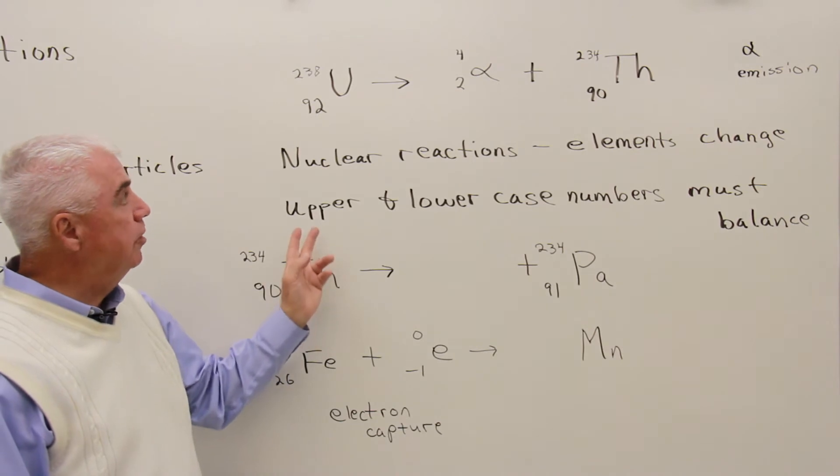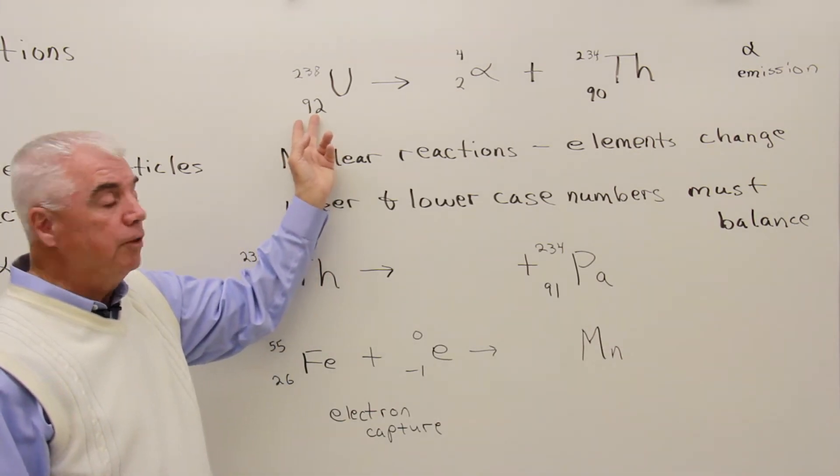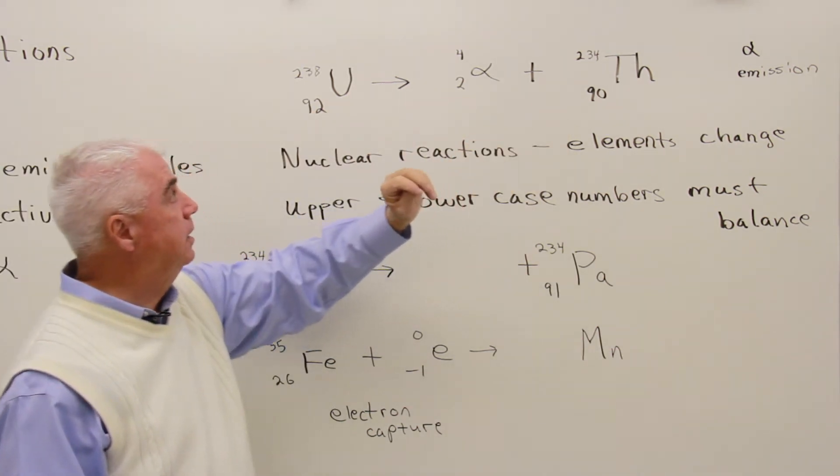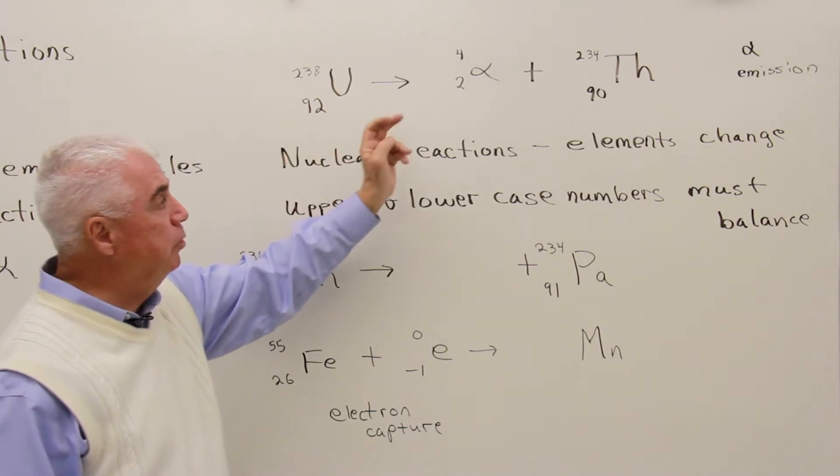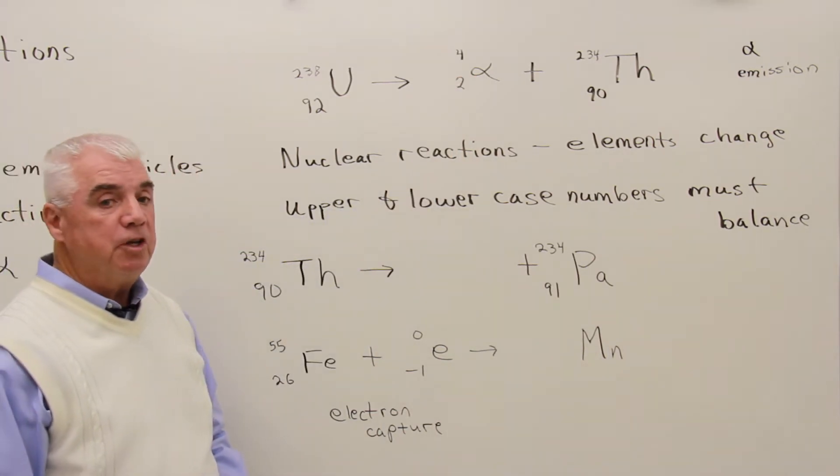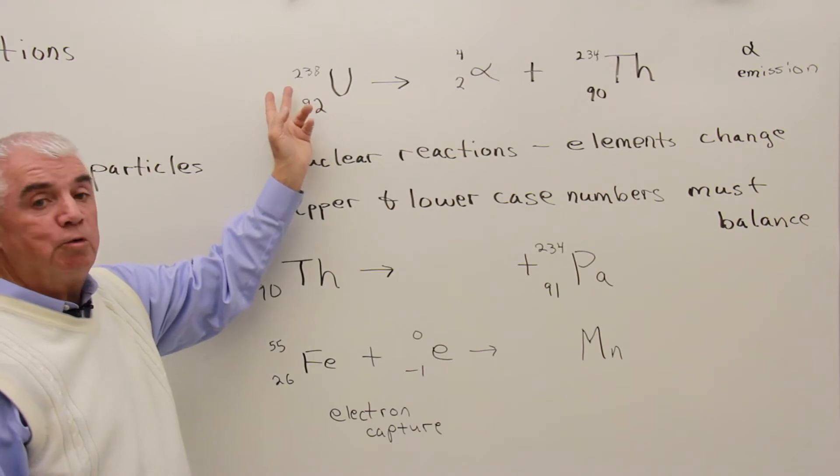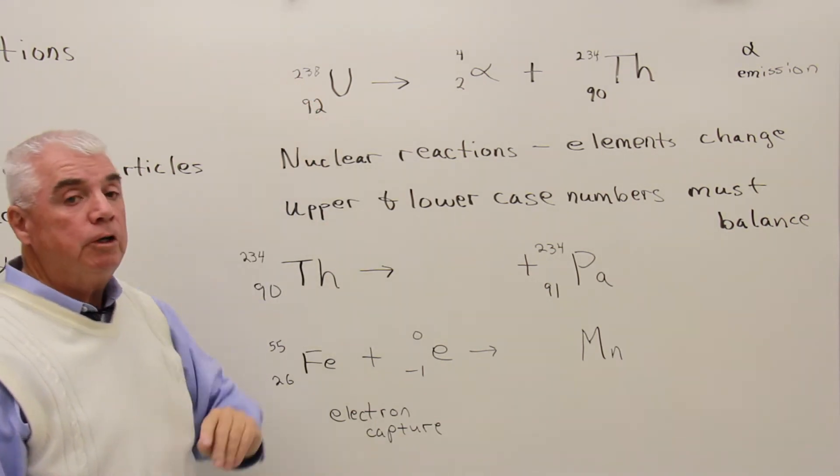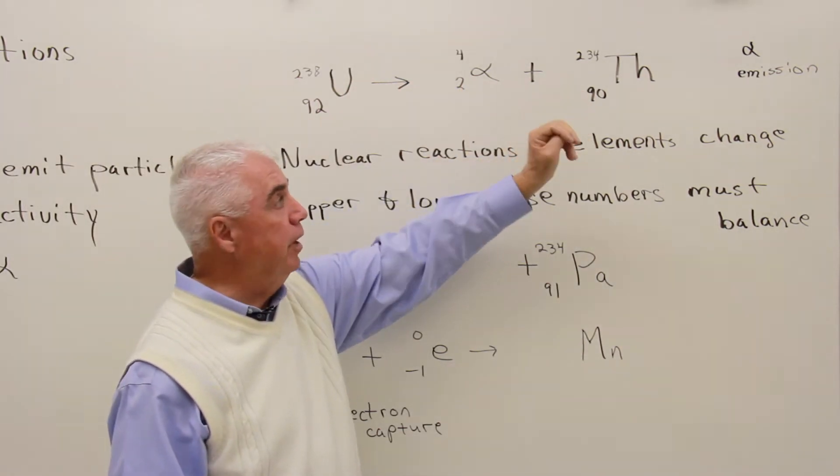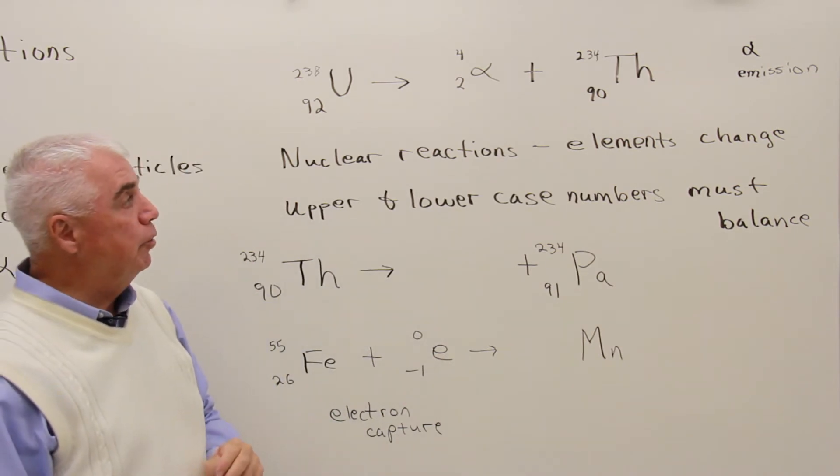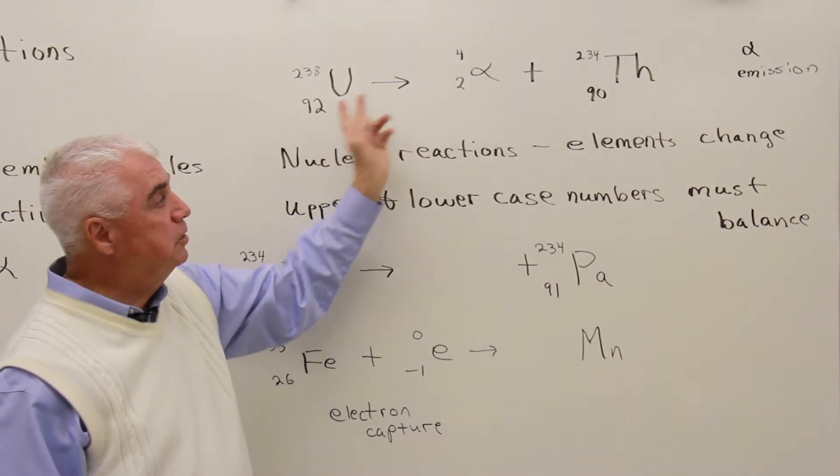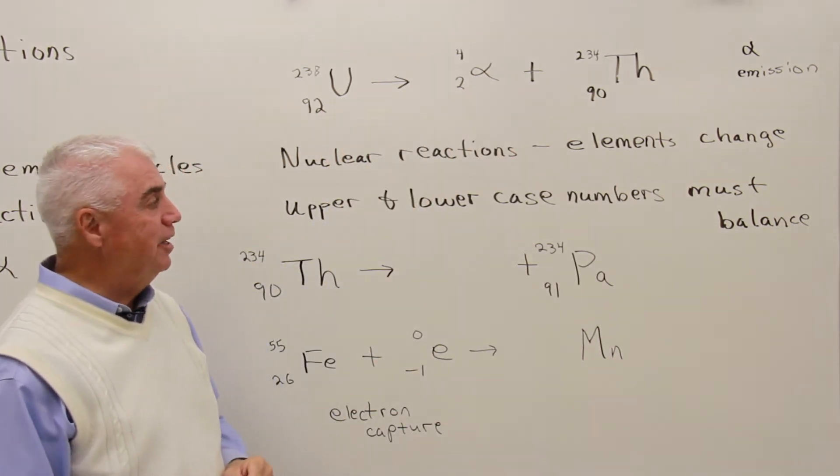When we balance a nuclear equation, the lowercase numbers on the left, the sum of those numbers, must equal the sum of the lowercase numbers over on the right. So we have 92 protons on the left, we've got to have 92 over on the right. And it's also true of the uppercase numbers. 238 protons and neutrons on the left, we've got to have 238 over there. Thorium has 234. That means that we must have four on this particle. And so this is an example of alpha emission.